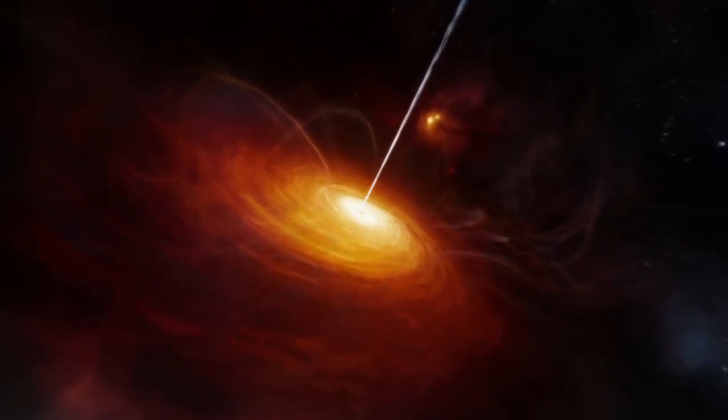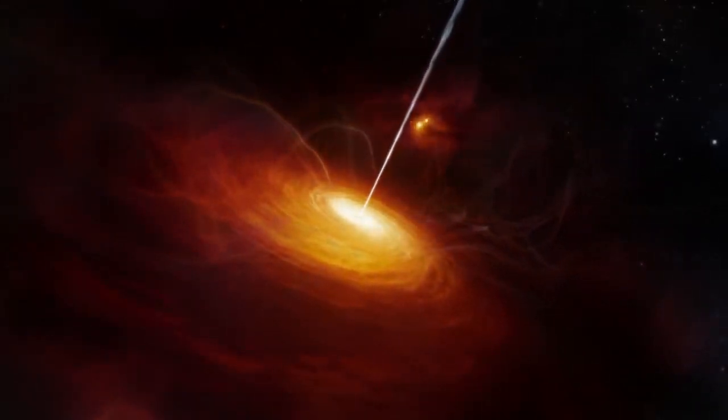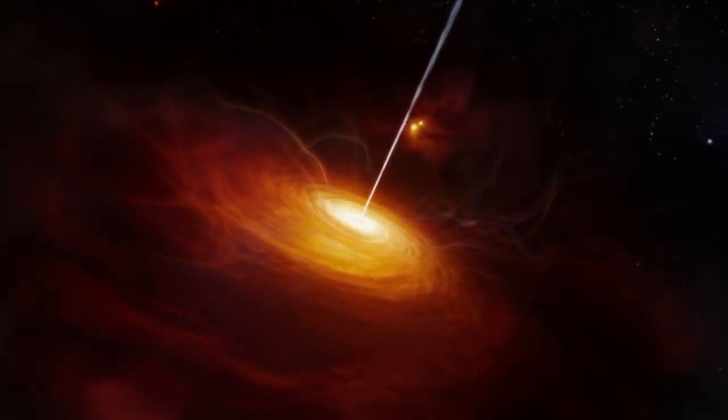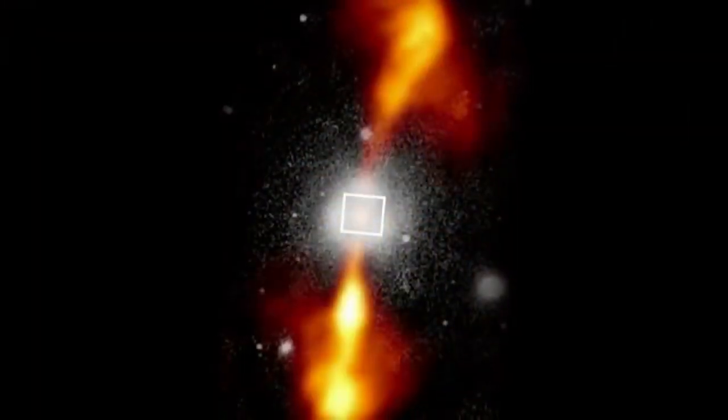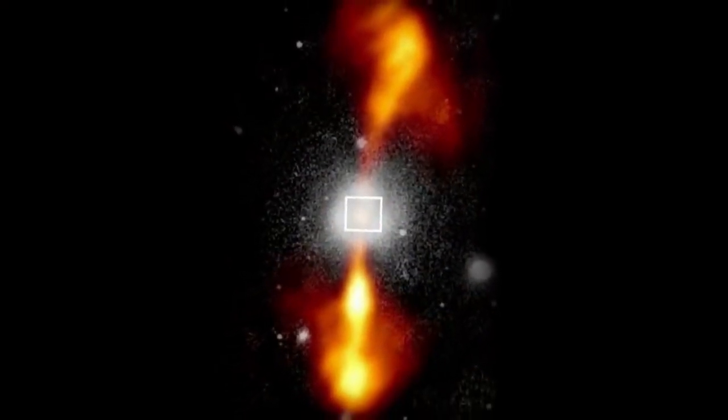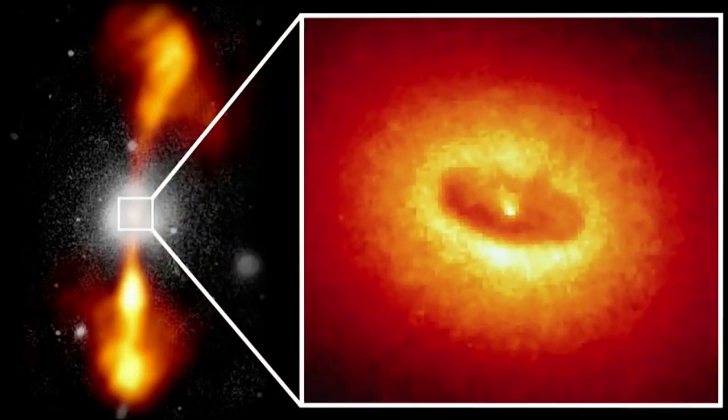The brightest and most active quasars are probably consuming matter at a high rate. In this Hubble image, we see a radio jet coming out of the center of the galaxy. Zooming in, we see the accretion disk and a dark central region.